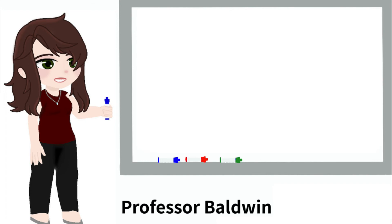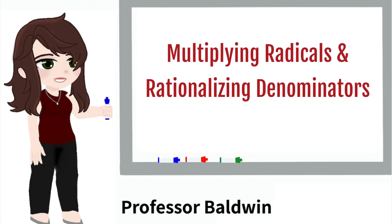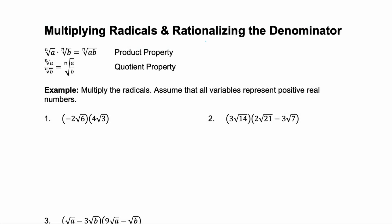I'm Professor Baldwin and today I'm going to teach you how to multiply radicals and rationalize the denominator. When you're multiplying or dividing radicals, you can use the product or the quotient property as long as the index — that value of n — is identical. They have to have the same index, and then you can multiply or divide those radicands as necessary.